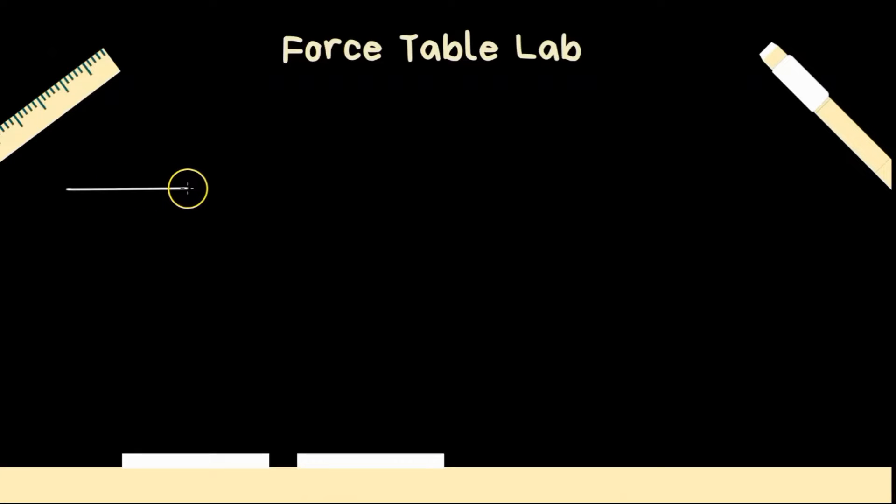Okay, let's start by drawing a coordinate system. This is going to be my positive x-axis and this is going to be my positive y-axis. And I'll also have this as 0 degrees and 90, 180 and so on. Okay so we have one vector right here at 0 degrees. Let's call that my first force vector, F1.